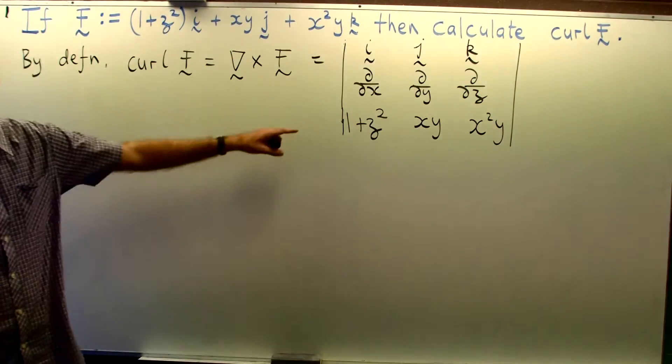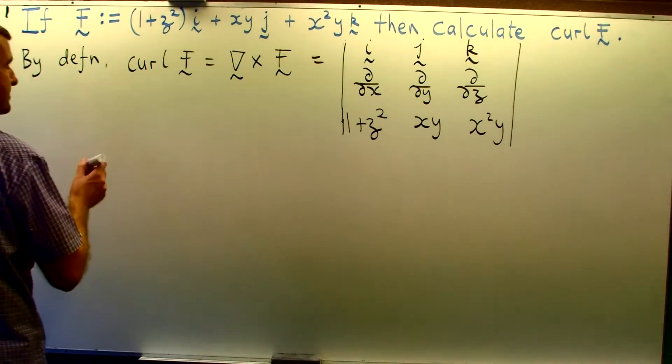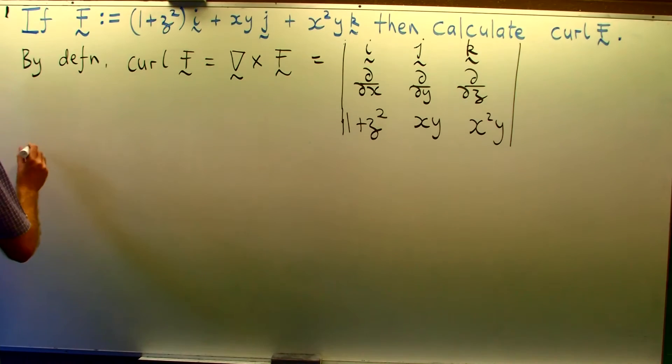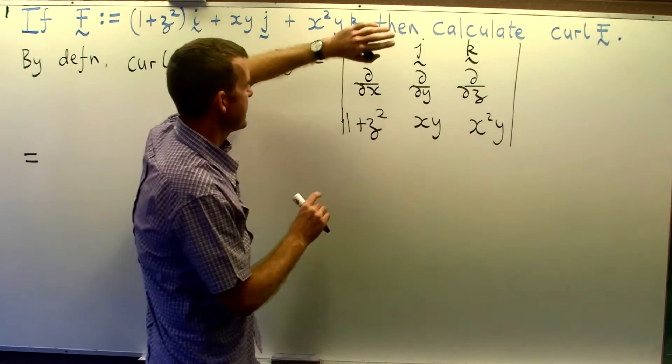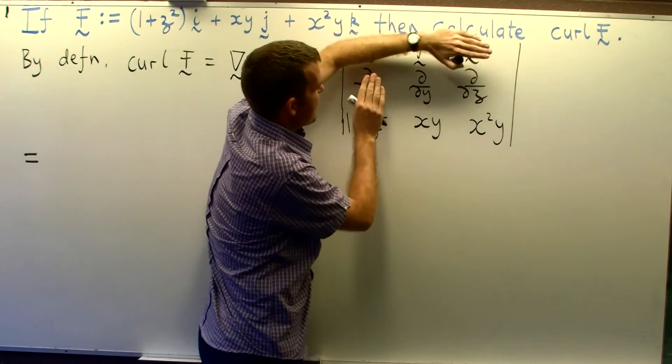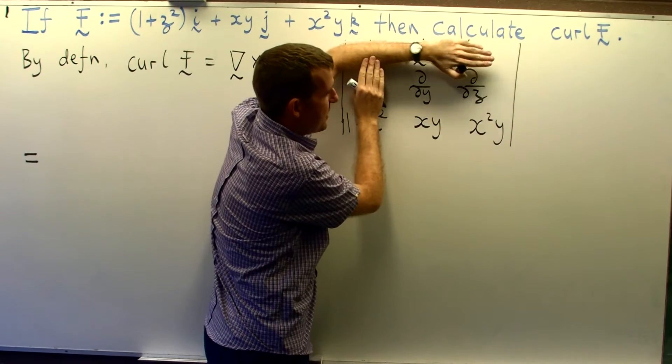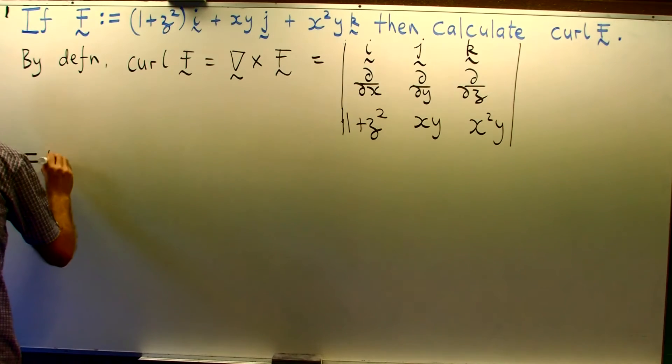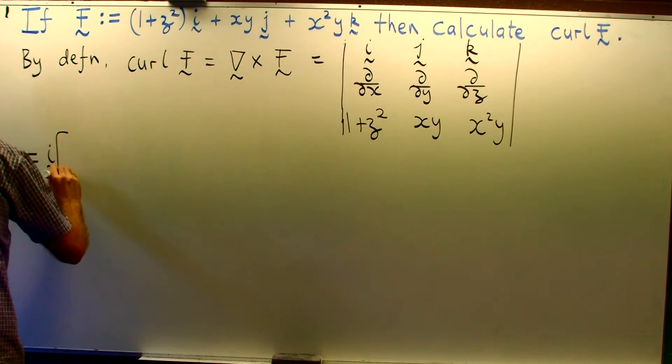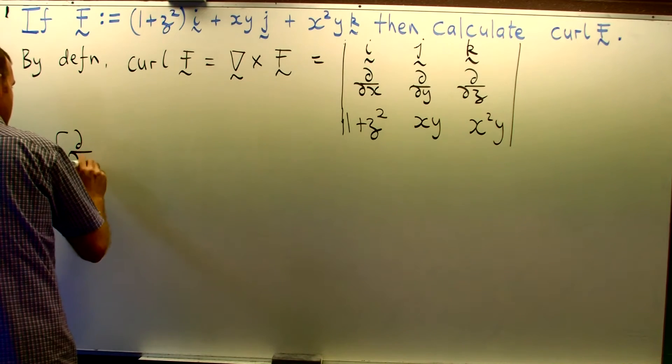Okay so now what I'm going to do is expand this and that will give me the curl. To expand this I'll expand along the top row and I start at i. I cover up the row and column that i is in and multiply by the determinant of what's left. Okay so if I do that I'll get the following.